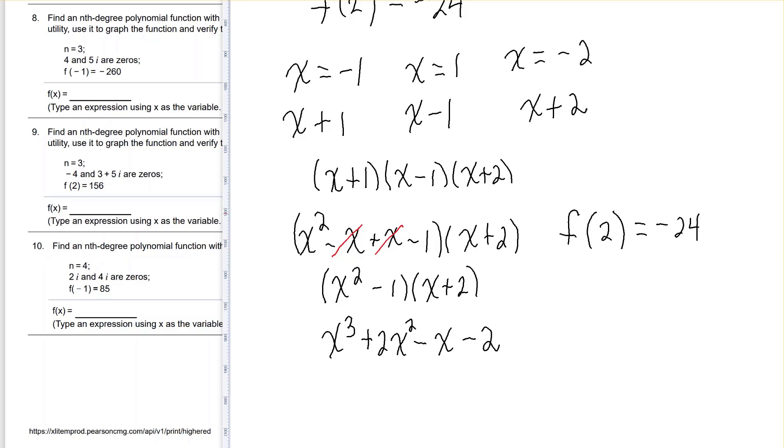So let's see what happens when we put a 2 in here. 2 to the third plus 2 times 2 squared minus 2 minus 2 gives me 8 plus 2 times 4 minus 2 minus 2.